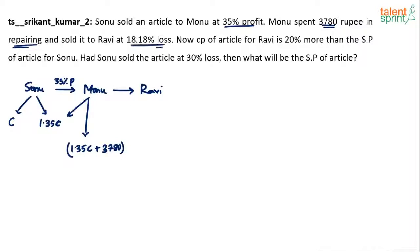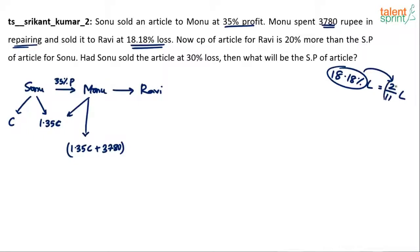He then sold it to Ravi at 18.18% loss. Note that 18.18% loss is equal to 2/11 as a fraction. So Monu is bearing a loss of 2/11, which means if he spends 100 rupees he loses 2/11 of it and gets only 9/11 of the value. So his selling price will be only 9/11 of his cost price.